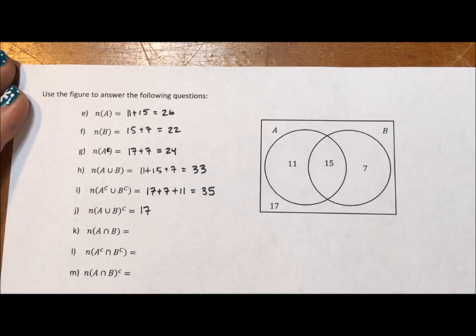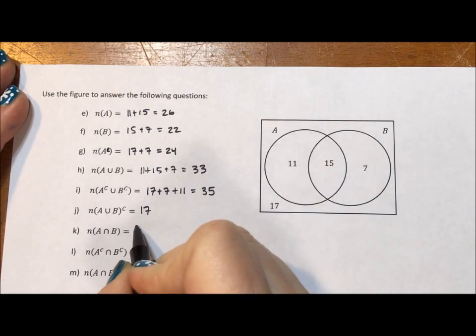Let's see, intersection, the number in the intersection of A and B, that means the region they share, that's 15.